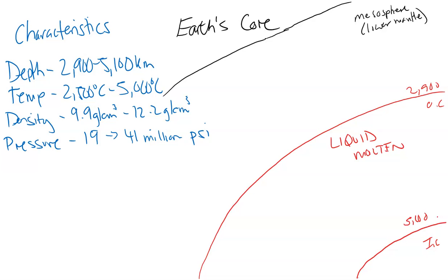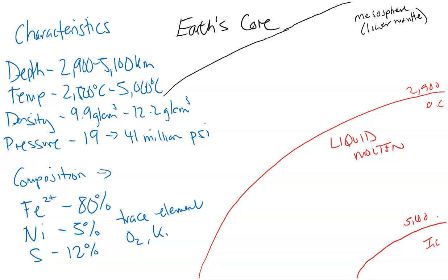Now, the composition is intriguing. The composition is mostly iron, which is around about 80%, with nickel around 5%. And you also have sulfur around 12%. And you also have some trace elements like oxygen, potassium, that make up a small amount of the outer core.